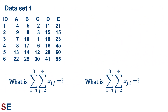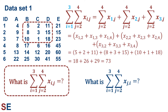Now let's look at some double summations. On the left, i goes from 1 to 3 and j goes from 2 to 4 for x_{i,j} — rows changing from 1 to 3, columns from 2 to 4. In the second summation, i goes from 1 to 3 and j from 2 to 4 the same, but the subscripts are reversed: now j represents the rows and i represents the columns. For our first summation, I've put a dashed line rectangle in the table to show which values will be summed.